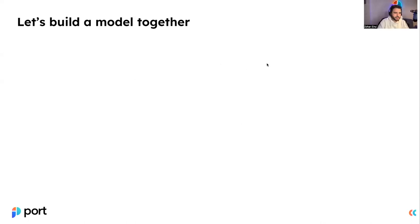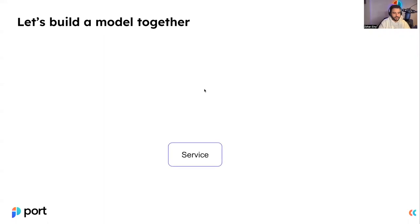Let's build our first model together. This is just an example, as you'll probably have a slightly different structure for your way of work. The first thing we want to answer is questions about services — like who owns this microservice and where can I find the API docs. So the first component we'll create is the microservice component, applying all the different properties that identify it: the owner, the links to different documentation, the README, and so on.